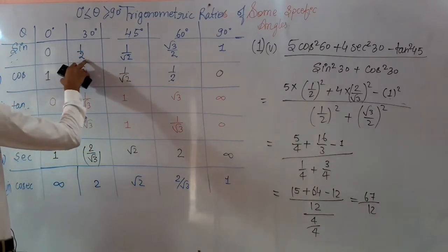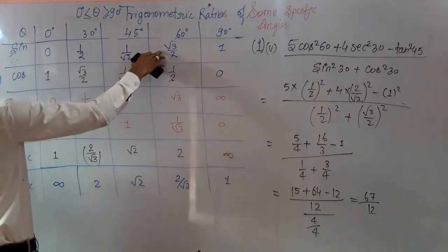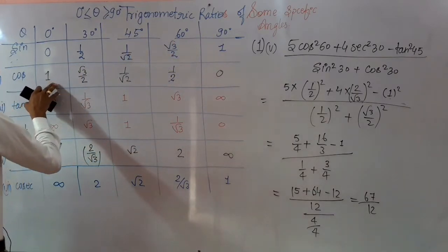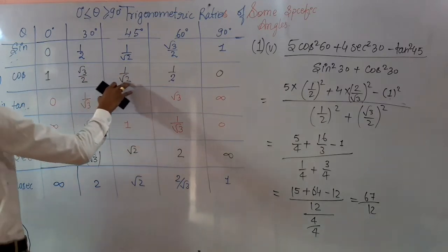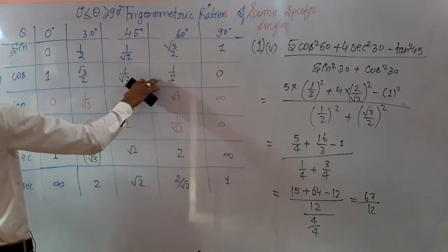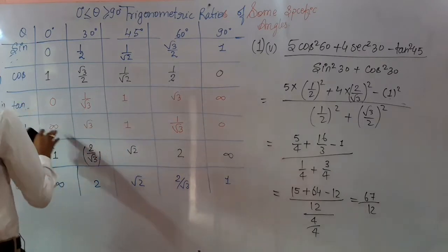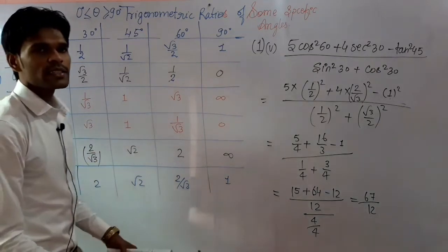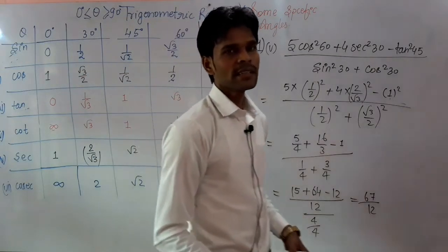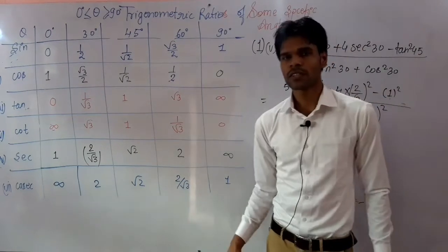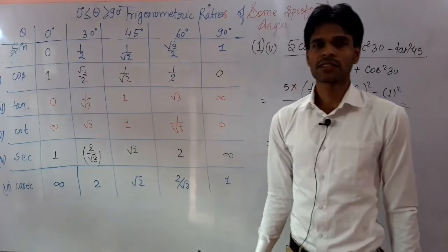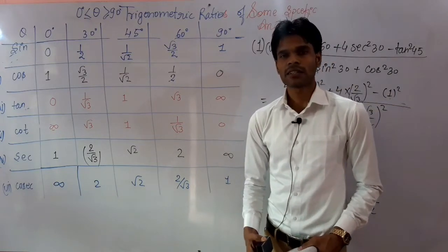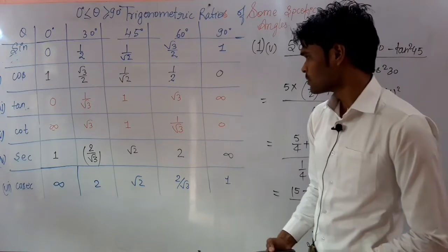Sin 0°=0, sin 30°=1/2, sin 45°=1/√2, sin 60°=√3/2, sin 90°=1. Cos 0°=1, cos 30°=√3/2, cos 45°=1/√2, cos 60°=1/2, cos 90°=0. Tan 0°=0, tan 30°=1/√3, tan 45°=1, tan 60°=√3, tan 90°=not defined. Cot 0°=not defined, cot 30°=√3, cot 45°=1, cot 60°=1/√3, cot 90°=0.